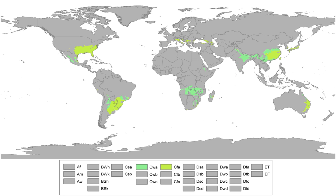However, while some climatologists have opted to describe this climate type as a humid subtropical climate, Köppen himself never used this term. The humid subtropical climate classification was officially created under the Trewartha climate classification.